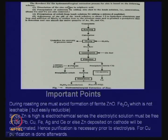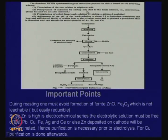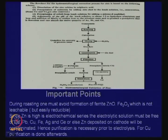The flow sheet for the hydrometallurgical extraction process for zinc is based on the following scheme. First, dissolution of zinc calcine in sulphuric acid — you take zinc into solution. You precipitate cadmium by adding zinc dust — a cementation process. Some cobalt and copper can also be removed. A very important point: cadmium is always associated with zinc, so whenever there is a zinc plant it necessarily produces cadmium. In our country we produce cadmium from the zinc plant, which takes care of our cadmium need.